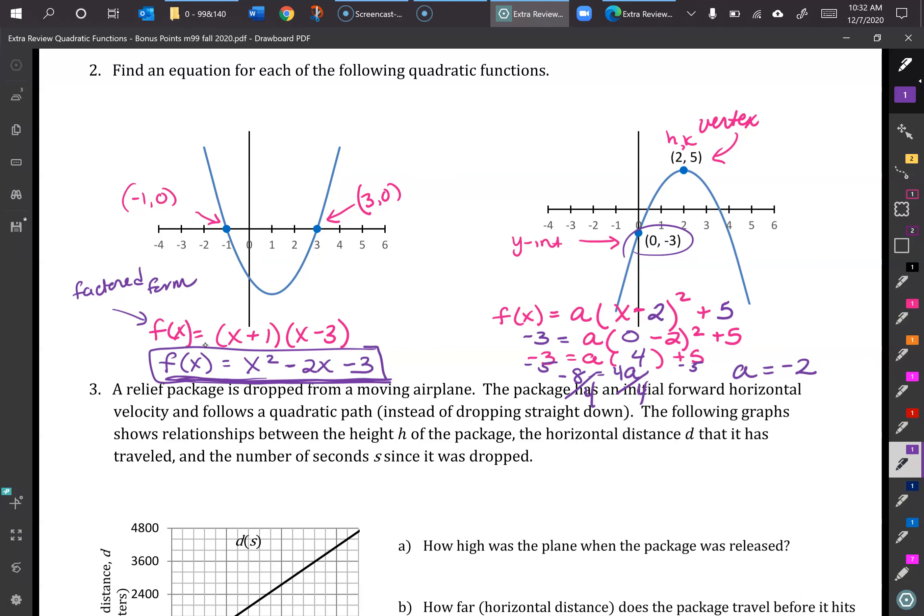So once we have that, we can go back up here and plug in a to our function. So I'm just going to write this down below here for you. f of x equals negative 2 times x minus 2 squared plus 5. That would be our final answer.